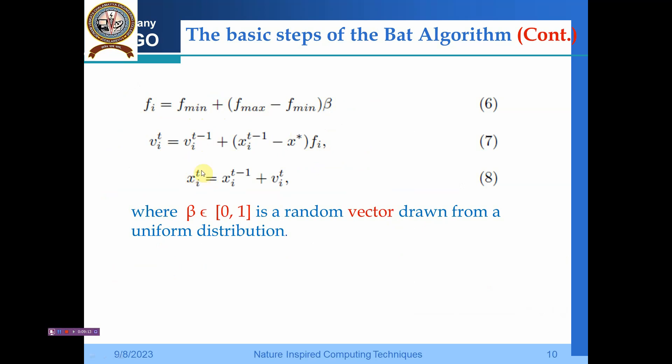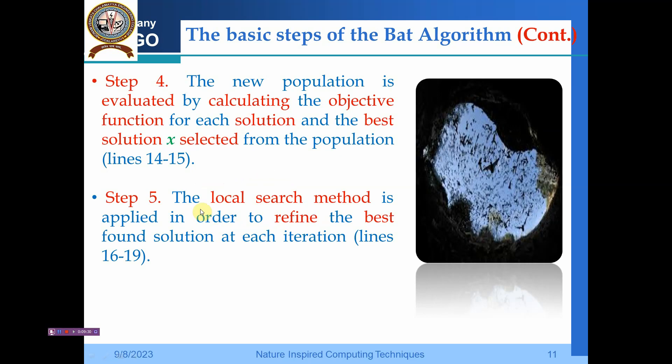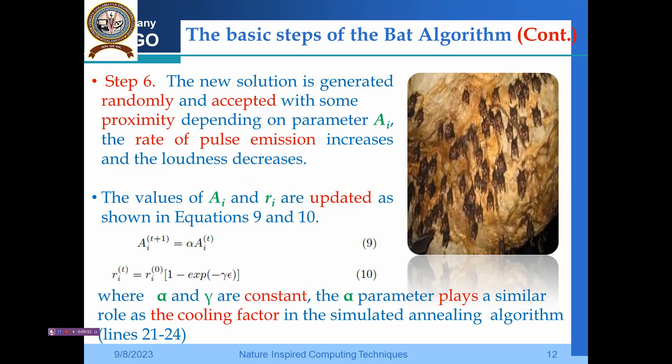In step 4, the new population is evaluated by calculating the objective function f(x_i) and the best solution x* is calculated. In step 5, the local search method is applied in order to refine the best found solutions at each iteration, as represented in lines 16 to 19.